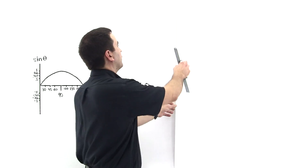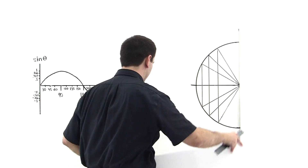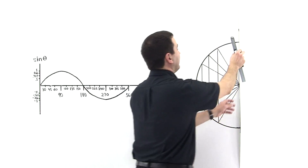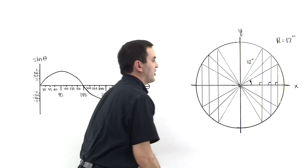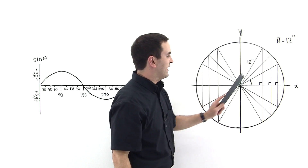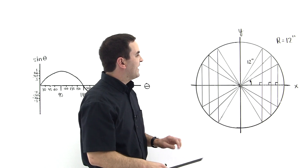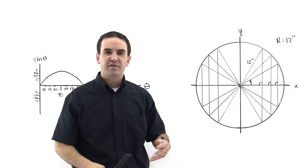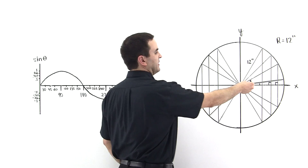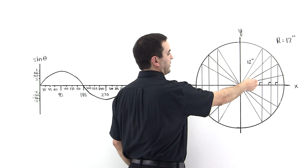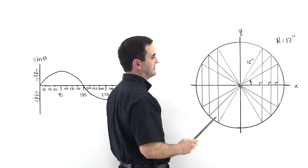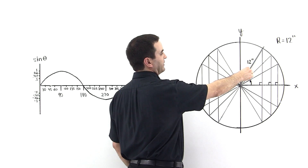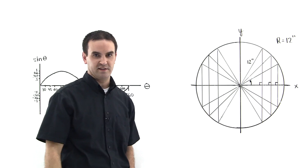I've plotted a circle here with a radius of 12 inches, and inside of the circle I've inscribed triangles. Each of the triangles has a 90-degree angle at its foot, and I've plotted them at different degrees. This first one has an angle of 30 degrees relative to the x-axis, this one has 45 degrees, and this one has 60 degrees relative to the x-axis.